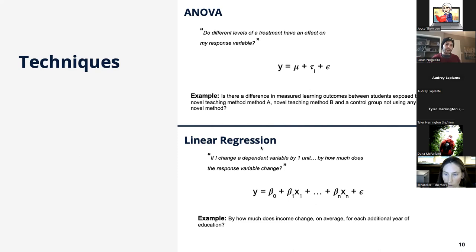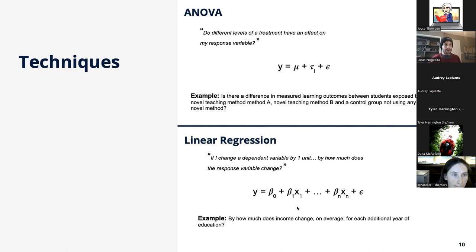Another popular statistical tool is linear regression, used to answer: if I change a dependent variable X by one unit, by how much does my response variable Y change? One example: by how much does income level change, on average, for each additional year of education? X would be years of education, Y would be level of income, and I would use this kind of model to describe the relationship between those two variables.